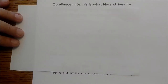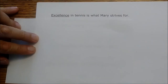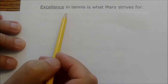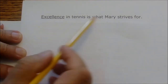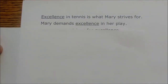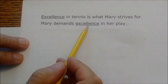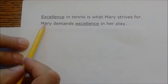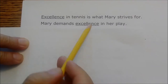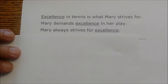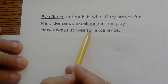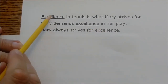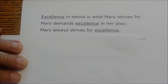Nouns can also be ideas. Using the word 'excellence': in 'Excellence in tennis is what Mary strives for,' excellence is the subject. In 'Mary demands excellence in her play,' excellence is the direct object. And in 'Mary always strives for excellence,' excellence is the object of the preposition 'for' — a prepositional phrase. So we have excellence in three locations and three functions, but it's still the same noun.